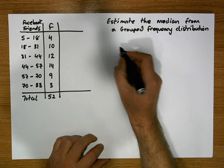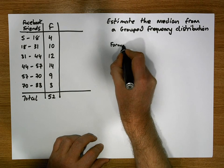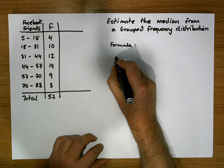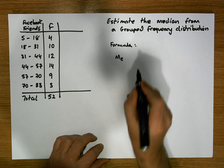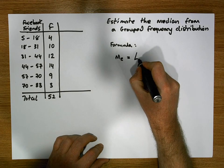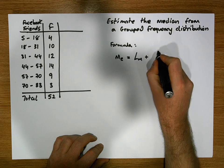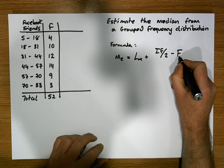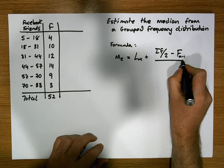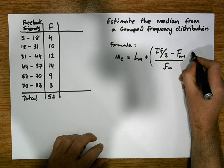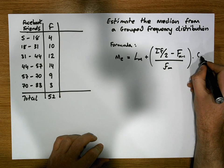So the formula to calculate the median, we'll define the median to be M subscript e, and what it's equal to is L subscript m plus sigma f over 2 minus capital F of m minus 1 over small f of m, and that's multiplied by C of m.